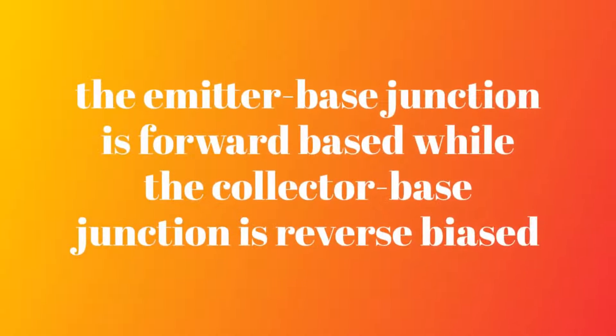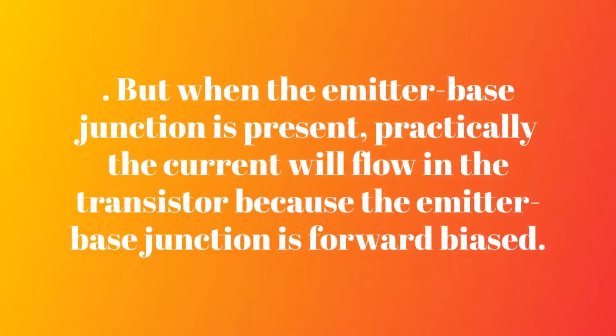Another important point to note is that the emitter-base junction is forward-biased while the collector-base junction is reverse-biased. If we assume for a moment that the emitter-base junction is not there, then no current will flow in the collector-base junction because it is reverse-biased. But when the emitter-base junction is present, practically the current will flow in the transistor because the emitter-base junction is forward-biased.